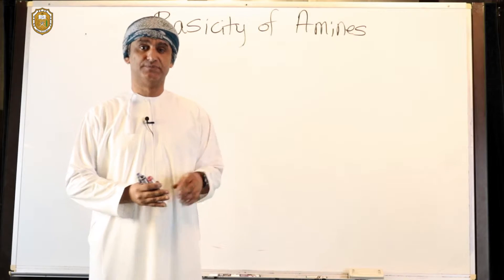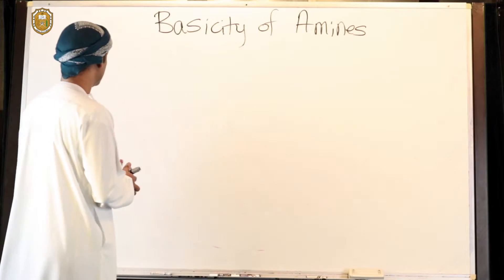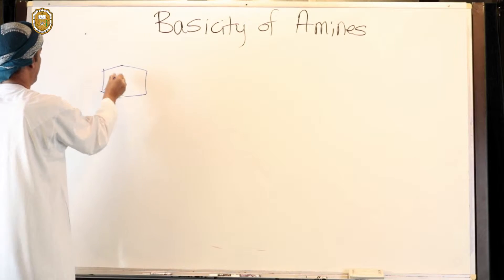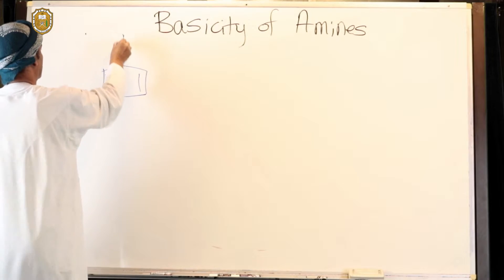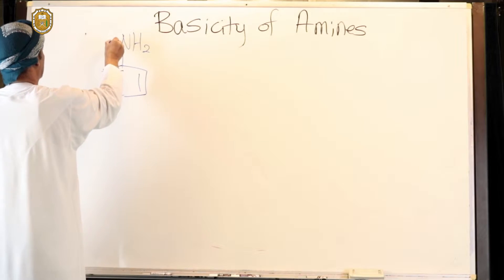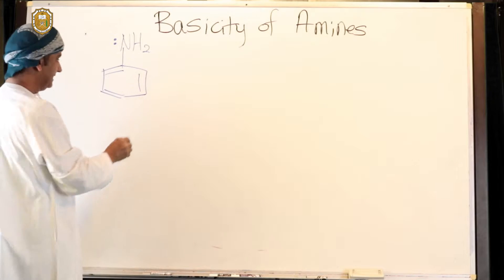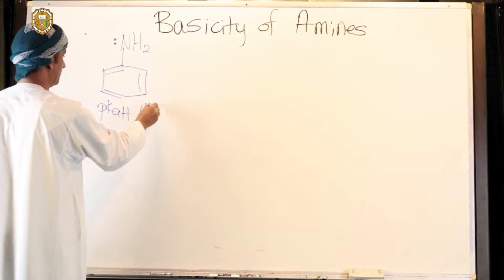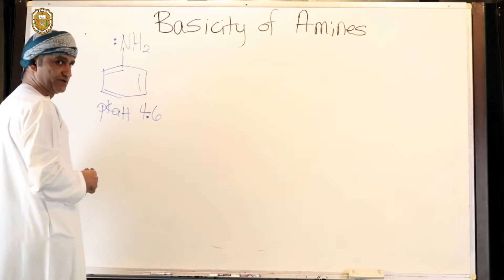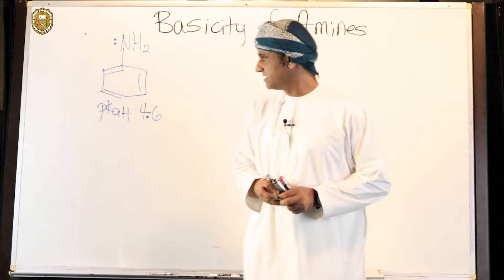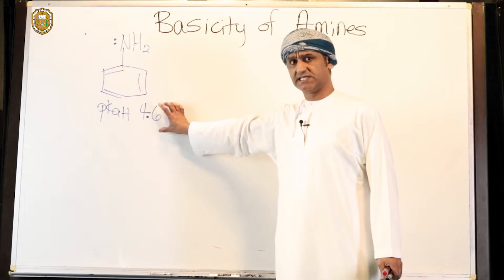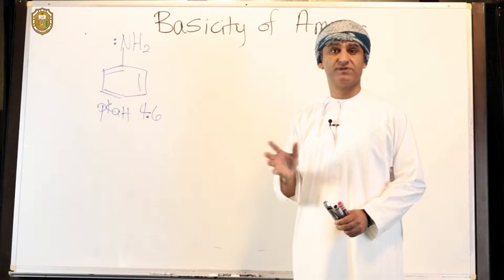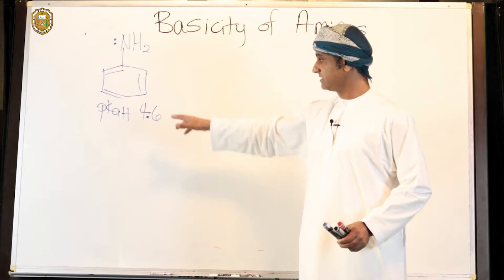Let's now take aniline — aminobenzene — to discuss next. The pKBH of aniline is approximately 4.63. If you recall, that's 4.6 versus about 9 to 11 for alkyl amines in general. So aniline is significantly less basic than alkyl amines.